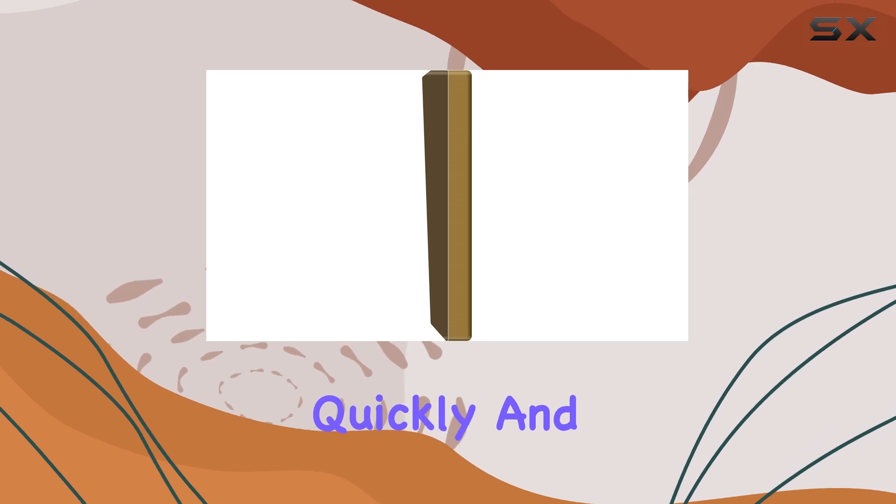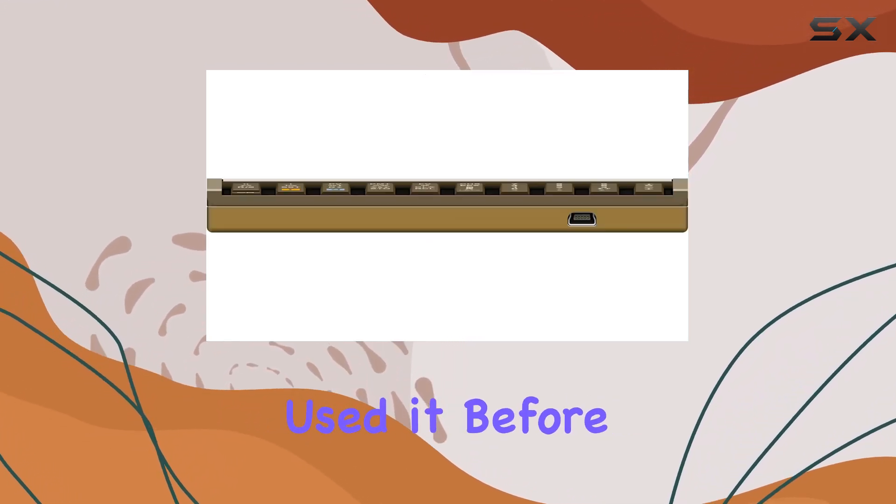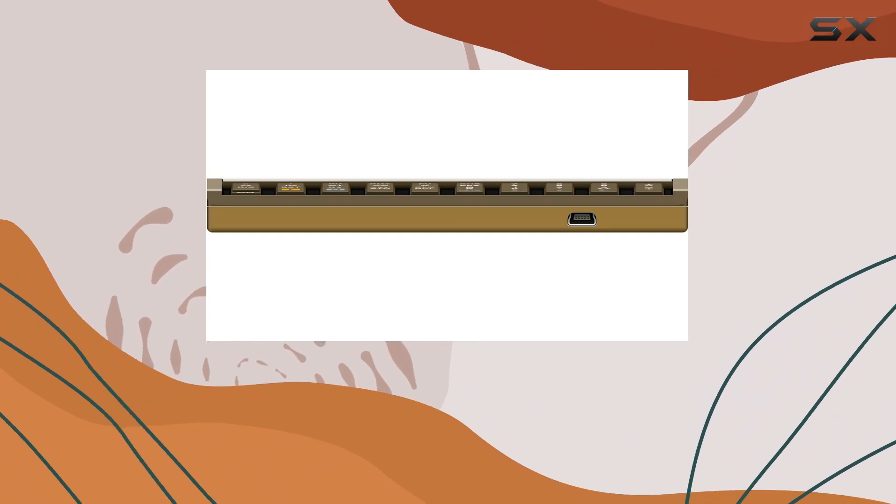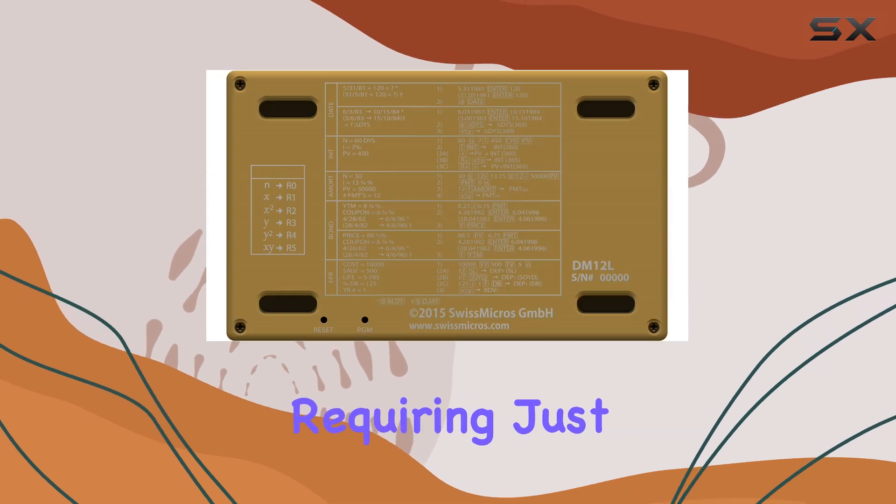With its RPN (Reverse Polish Notation) input method, the DM12L offers an efficient way to perform complex financial calculations quickly and accurately. RPN might take some getting used to if you haven't used it before, but once you master it, you'll find it can speed up your workflow significantly.